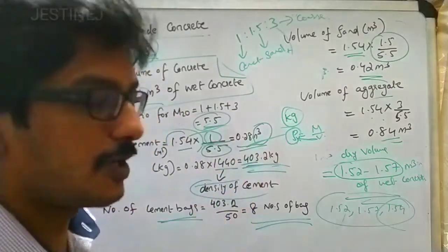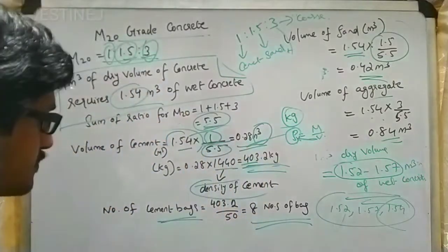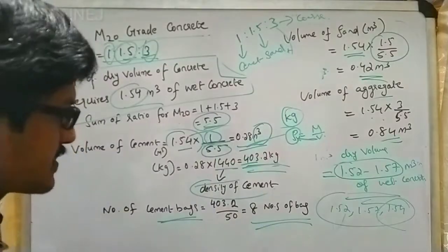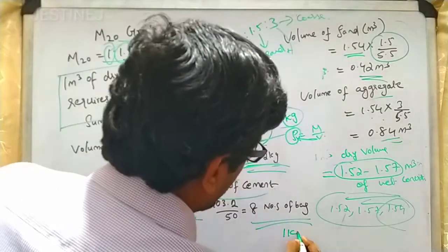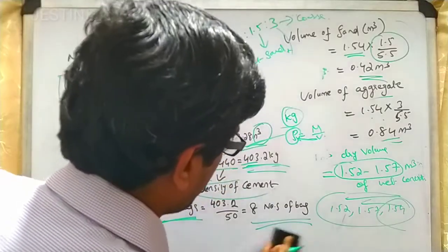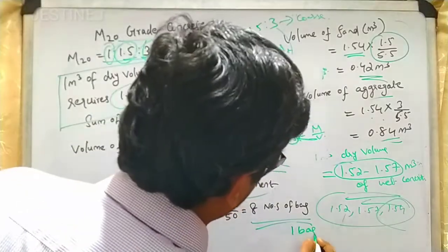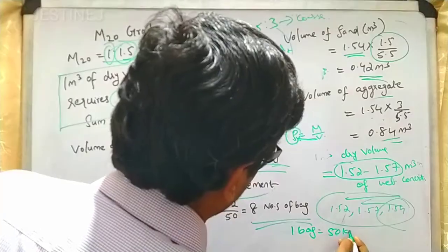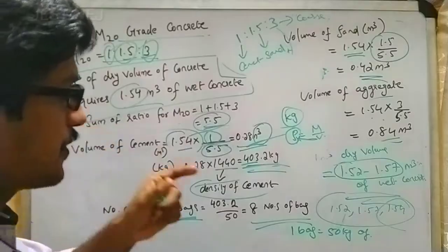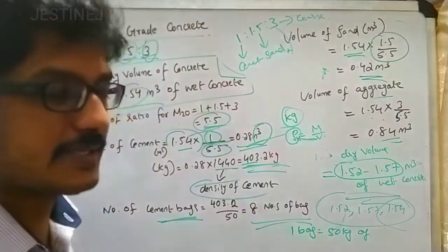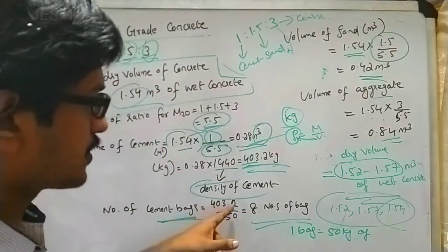Sometimes it will be represented in cubic meters, sometimes in kilograms, and in some cases as number of cement bags. One bag can hold 50 kg of cement, so you can easily calculate. In this case, for M20 grade of concrete, eight bags are required, which is 403.2 divided by 50.